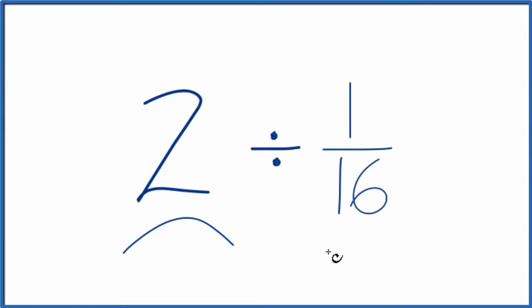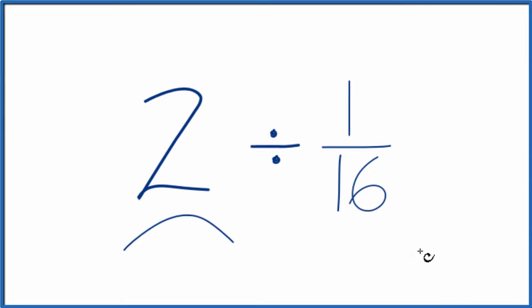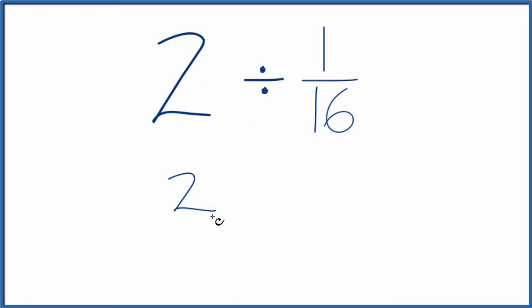Here's how you can divide 2 by 1/16. Starting off, let's call this 2 over 1. It's still 2 because we're just dividing by 1, but now this is a fraction. That's going to make it easier.